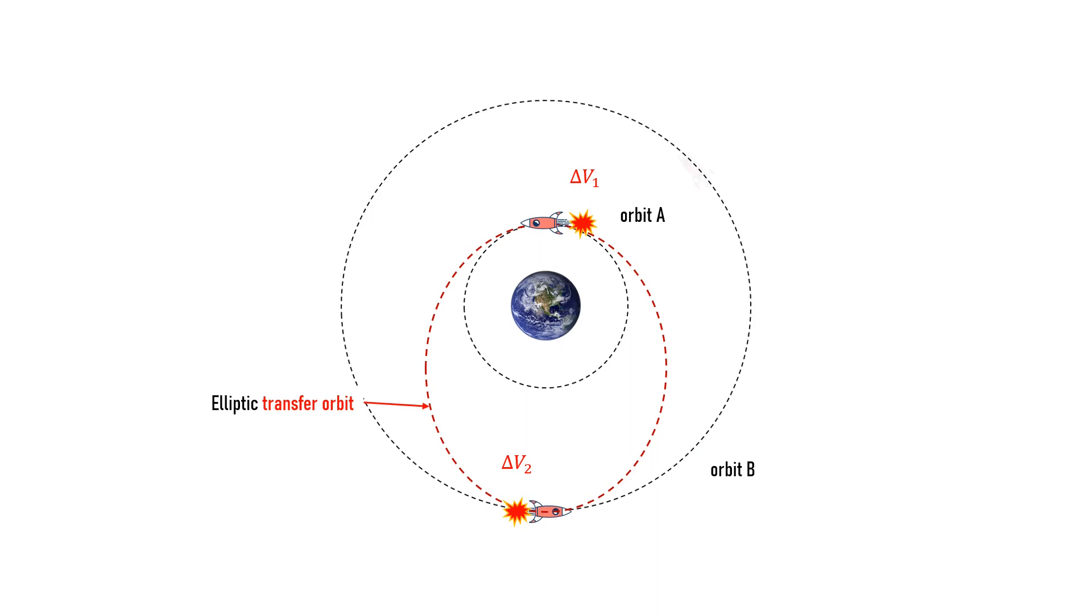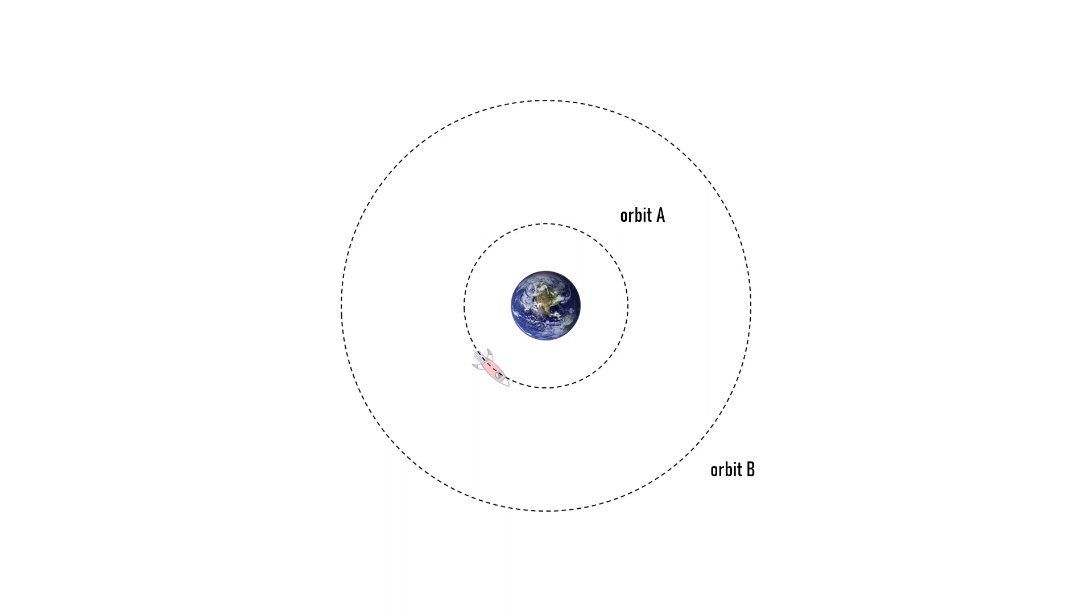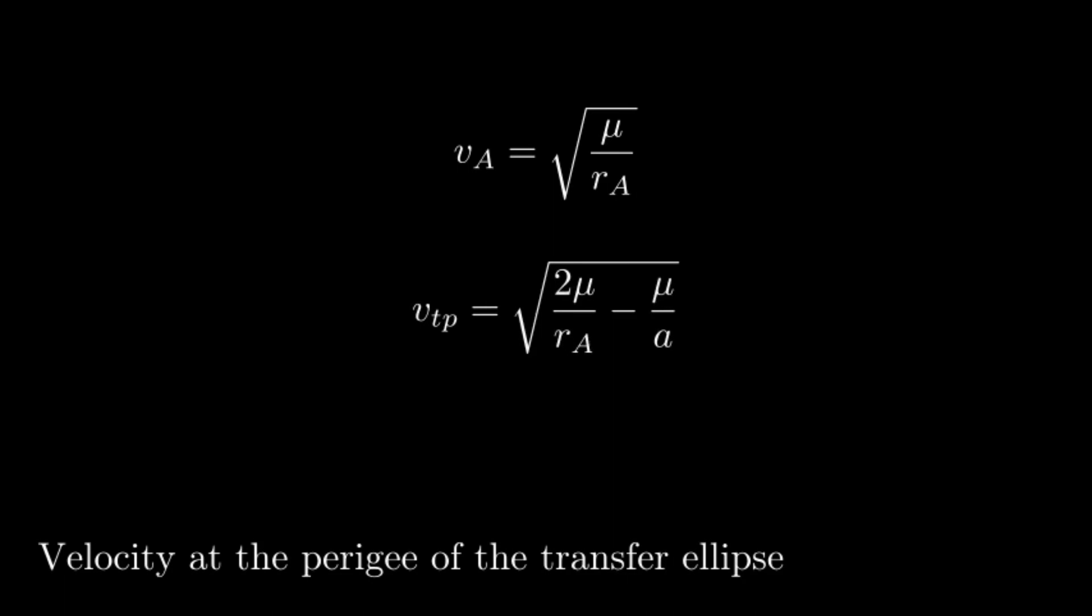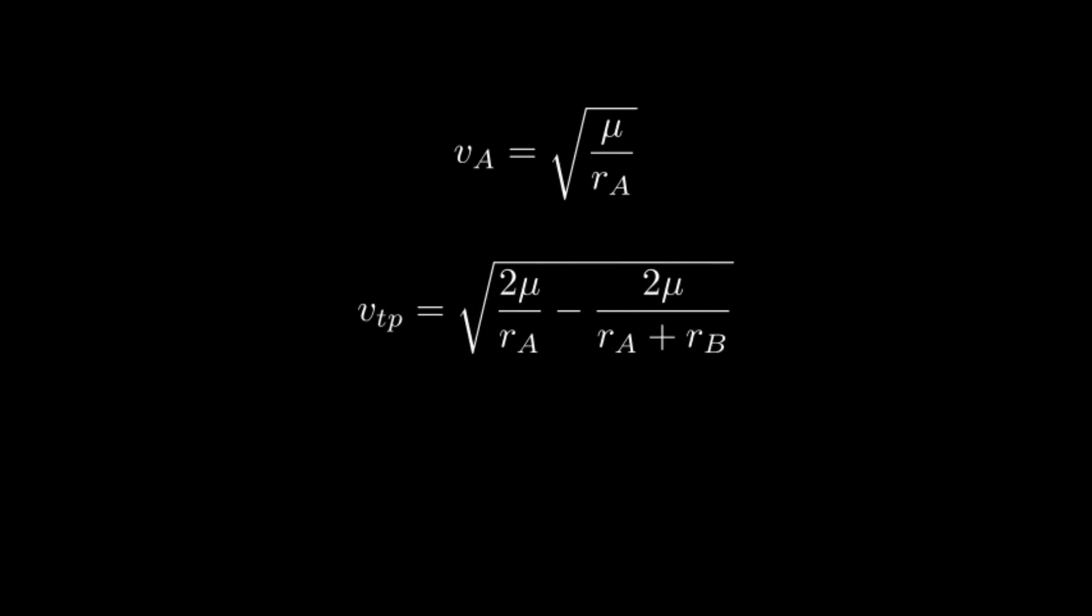We need the difference between the initial orbital speed and the perigee speed. The initial orbital speed is v equals to the square root of gravitational parameter mu divided by r sub a. Next, the perigee speed can be calculated from the speed formula derived from the vis-viva equation. Now a here, the semi-major axis, is equivalent to r sub a plus r sub b divided by 2. Look again at the figure to confirm this.